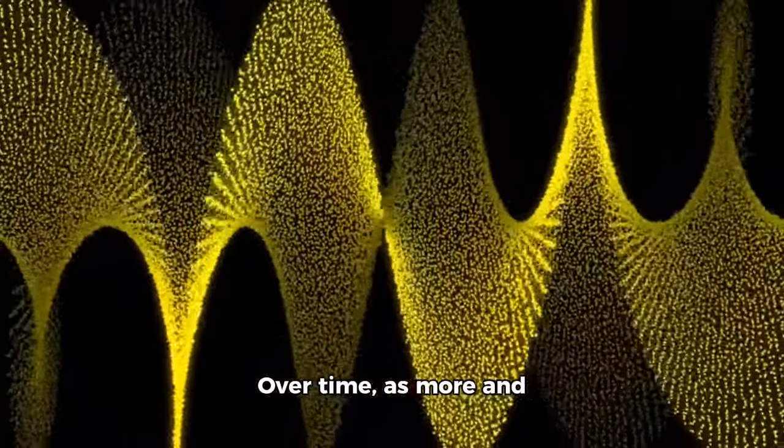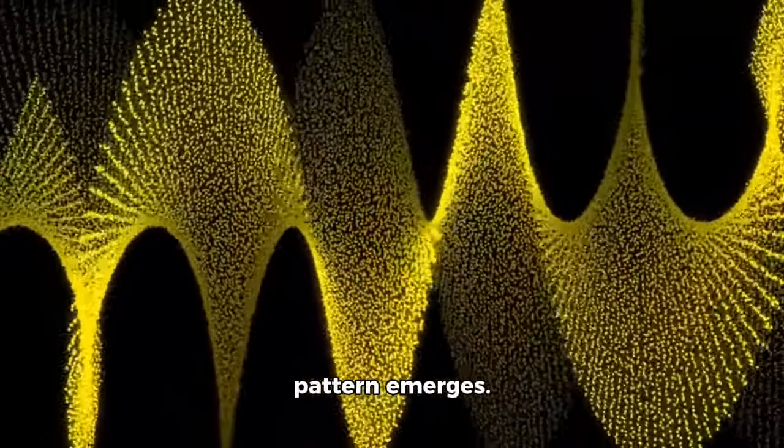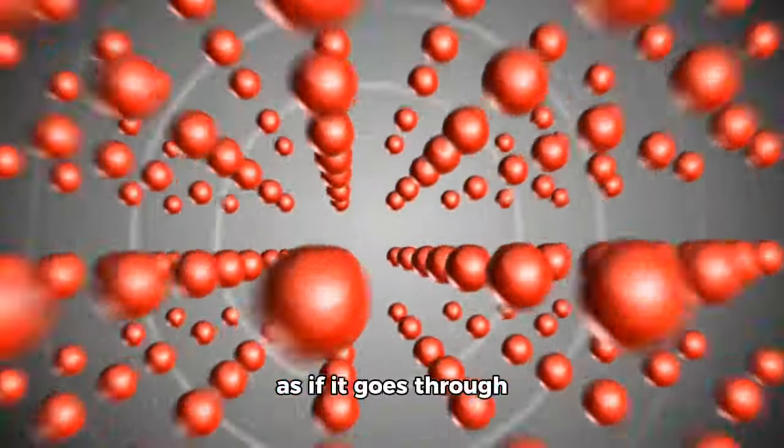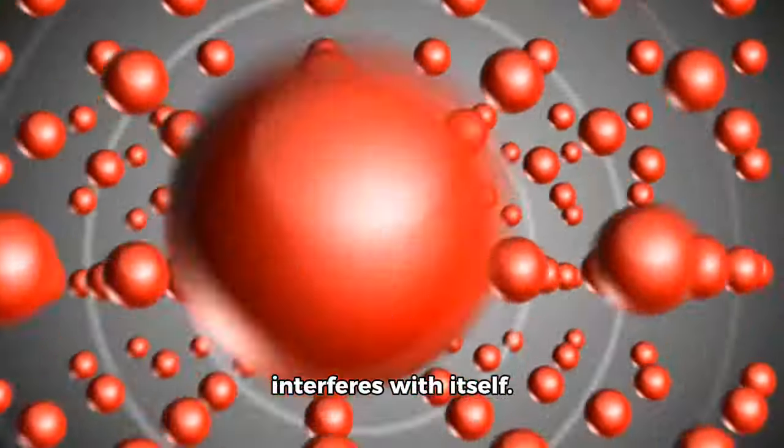Over time, as more and more particles are sent through, the interference pattern emerges. This suggests that each particle behaves as if it goes through both slits simultaneously and interferes with itself.